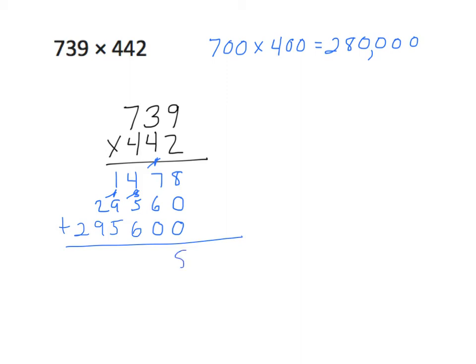8 plus 0 plus 0 is 8. 7 plus 6 is 13 — regroup. 4 plus 5 is 9, plus 6 is 15, plus 1 is 16 — regroup. 1 plus 9 is 10, plus 5 is 15, plus 1 is 16 — regroup. 2 plus 9 is 11, plus 1 is 12 — regroup. And 2 plus 1 is 3. We'll put in our comma. We see 326,638. We rounded both factors down, so we know our answer is going to be greater than 280,000 — that's a reasonable answer.